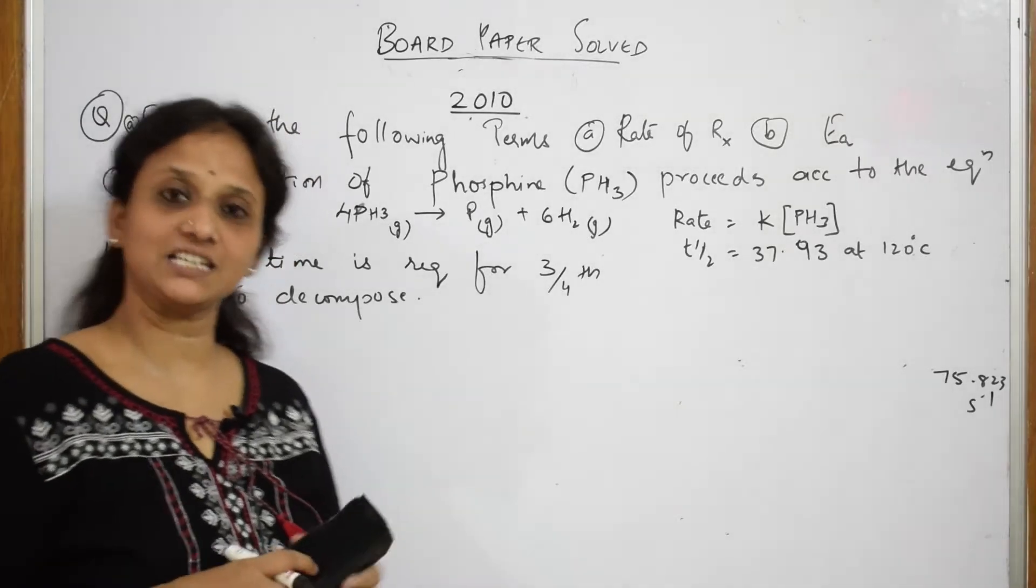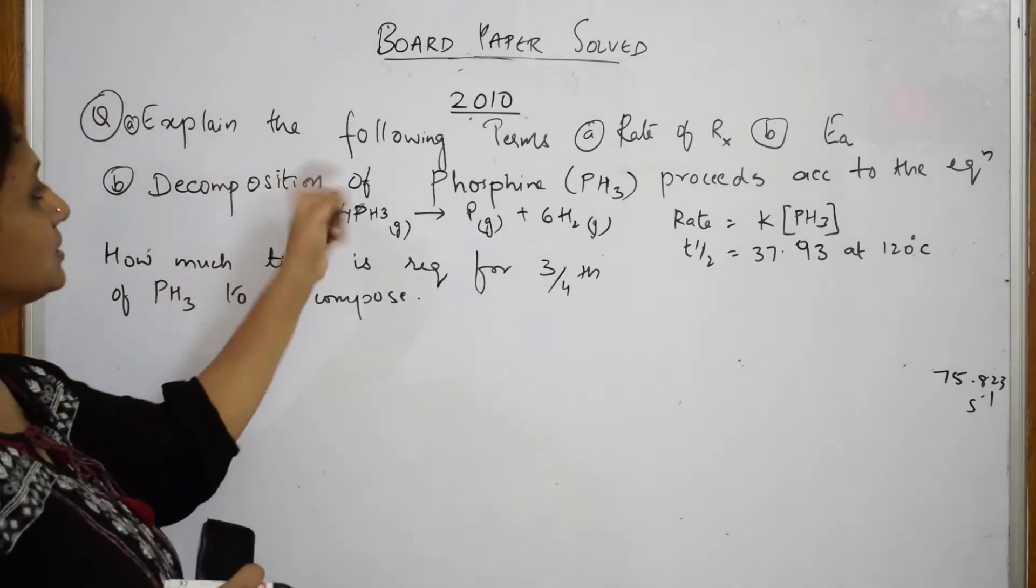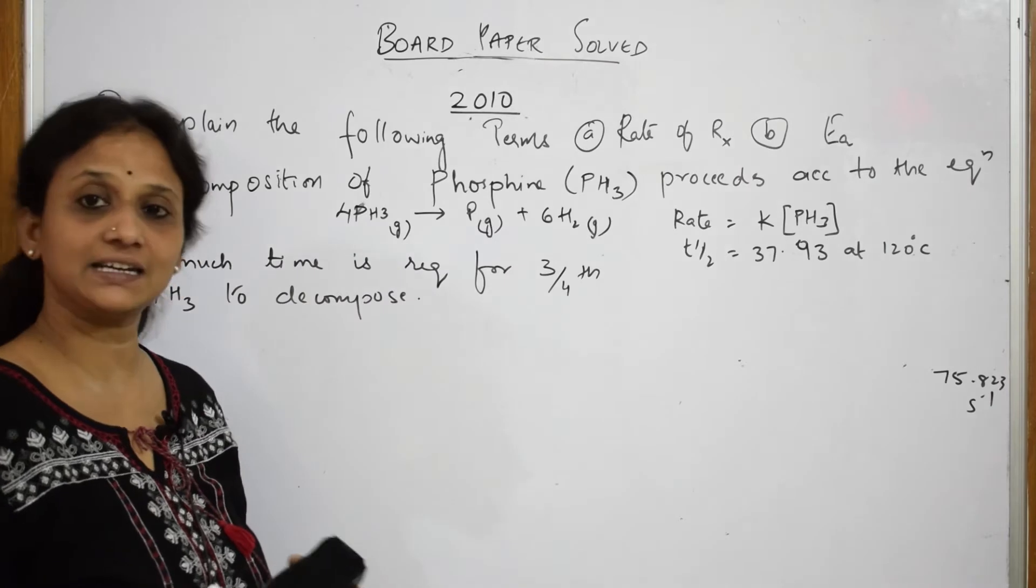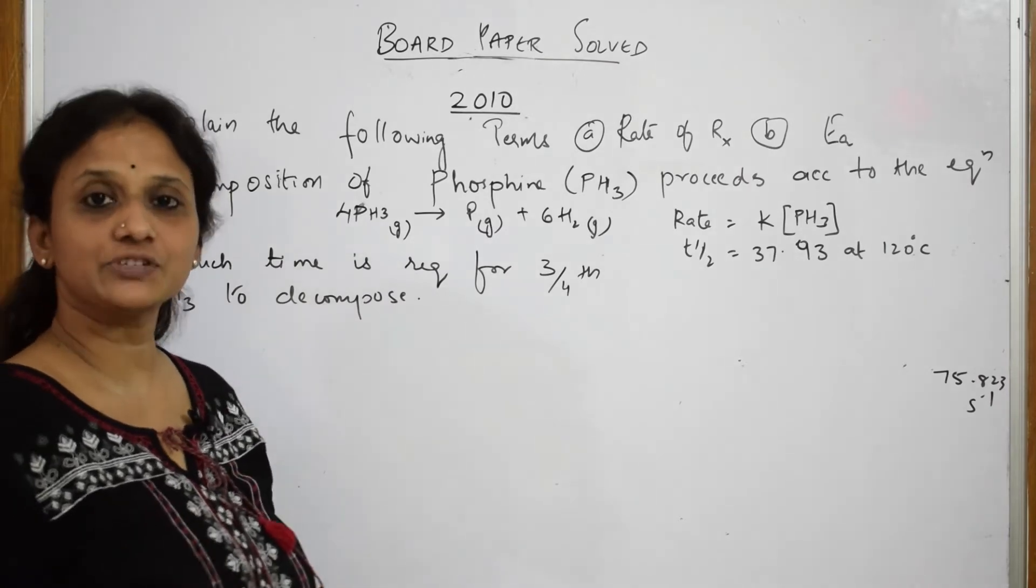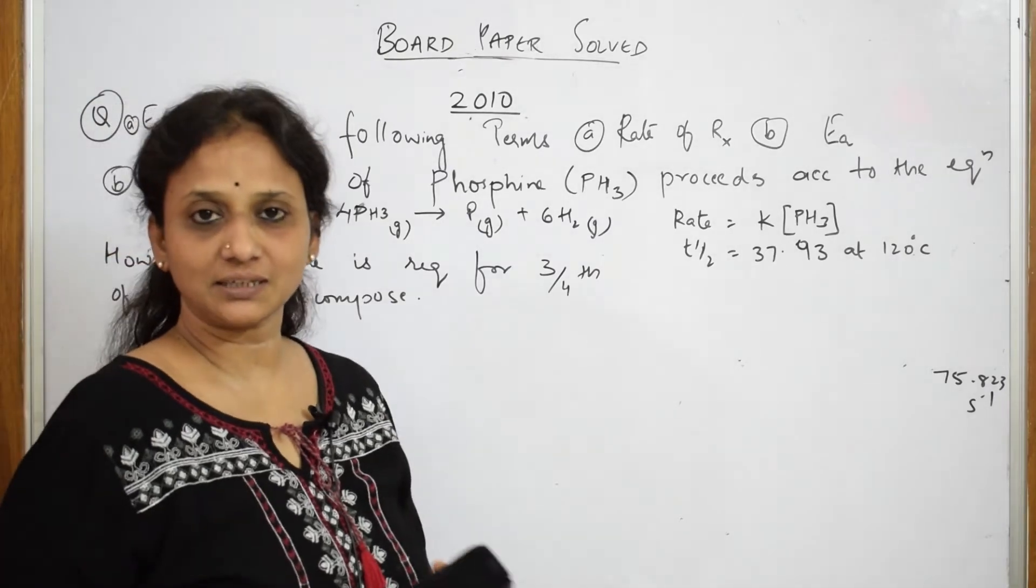So, let us come back and do the 2010 paper. Let us read the question. Explain the following terms: rate of the reaction and activation energy. I have done both the videos on this, just go to the playlist in the chemical kinetics chapter.